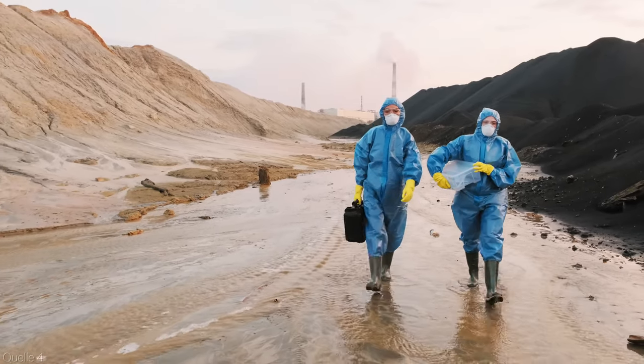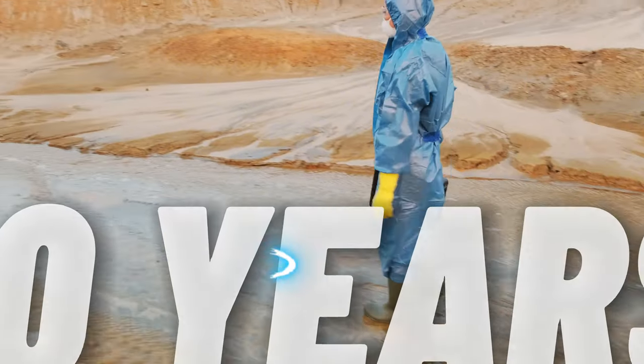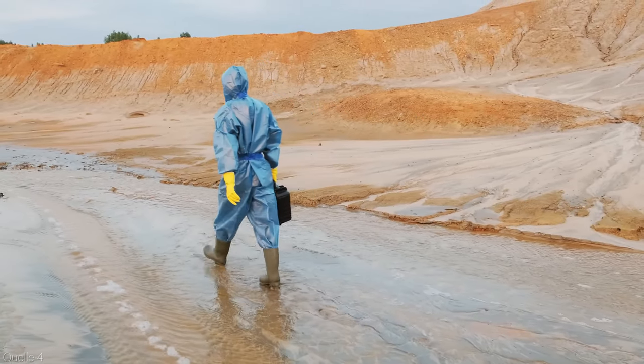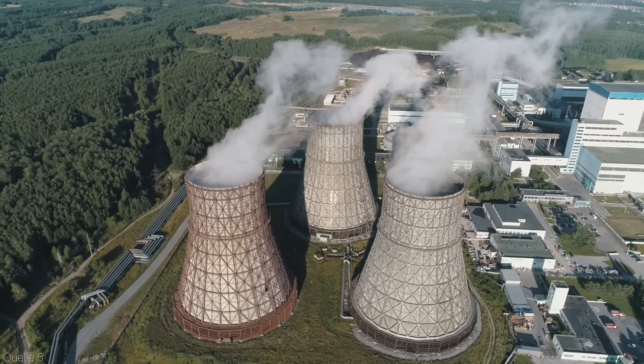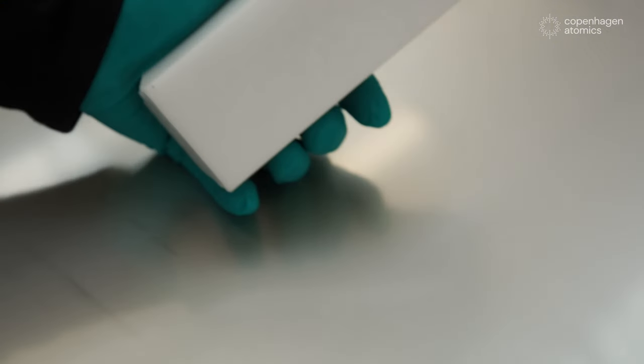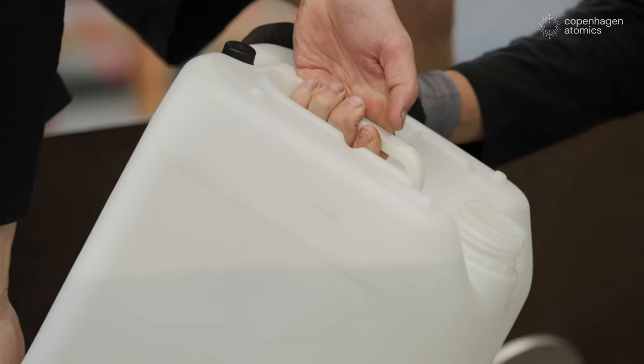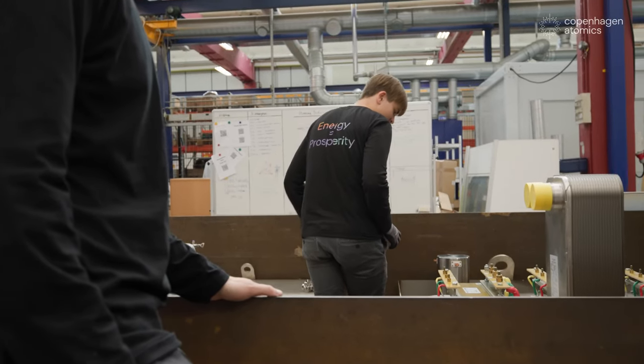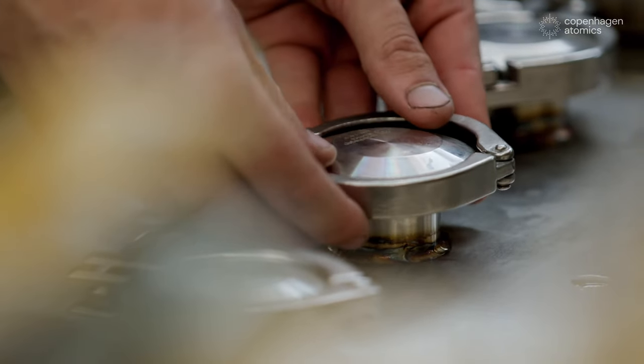A technology that could potentially provide electricity for 1500 years, using a metal that is more abundant than uranium and less radioactive than coal. Yes, you heard that right. We are talking about thorium, and how a company called Copenhagen Atomics is building a new type of reactor that can burn nuclear waste and produce clean and cheap energy. Stick around and find out how this could change everything in 2024.